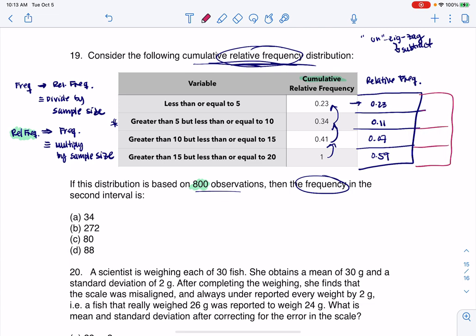All right, and we can just check that this would have come out correct. 0.23 here, if I zigzag, 0.23 plus 0.01 is 0.34. 34 and 7 is 41. 41 and 59 is 1, and that matches these. So if you're more comfortable, let me put cumulative relative frequency. If we're more comfortable with addition, you can always check yourself at the end. But the takeaway here is that this second interval is looking at 11%.